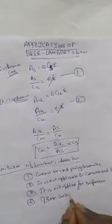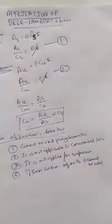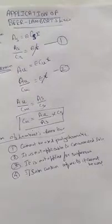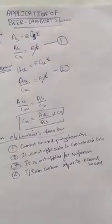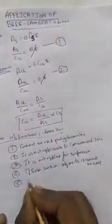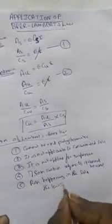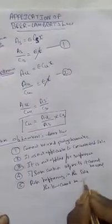If the solution contains impurities, Beer-Lambert's law cannot be used. Another limitation: if a chemical reaction such as polymerization or dissociation occurs in the solution — for example, if the solute and solvent react to form polymerization — then the law cannot be used, as a reaction is happening in the solution.